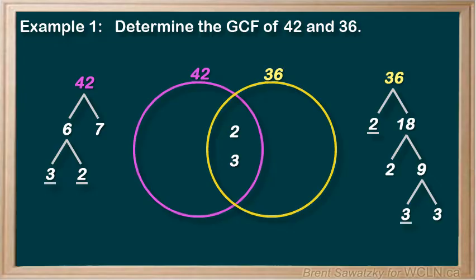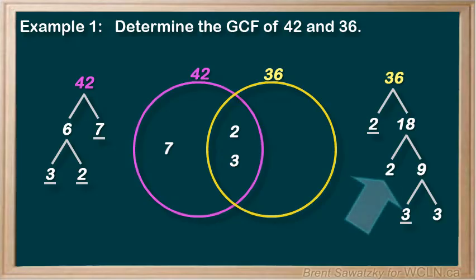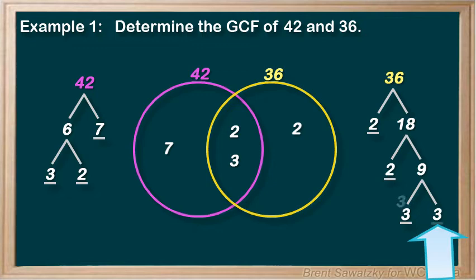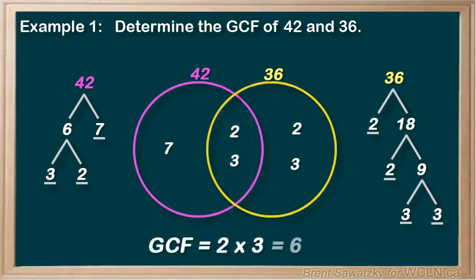The rest of the numbers don't have partners in the other group, so we're done with the overlap area. The 7 is only in the 42 circle, so we put it there. The remaining 2 is only in the 36 circle, so it goes there. And the remaining 3 belongs only in the 36 circle as well. Our last step is simply to multiply all the items in the overlap region — in this case, a 2 and a 3. So 2 times 3 is 6, and the greatest common factor of 42 and 36 is 6.